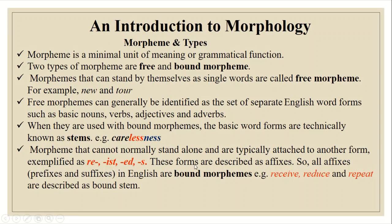All affixes — prefixes and suffixes in English — are bound morphemes. Similarly, 'receive', 'reduce', and 'repeat' are also described as bound stems and they are bound morphemes, because if we separate 're-' from 'ceive', 'duce', and 'peat', we cannot get any meaning. So they are bound morphemes or bound stems in morphology.